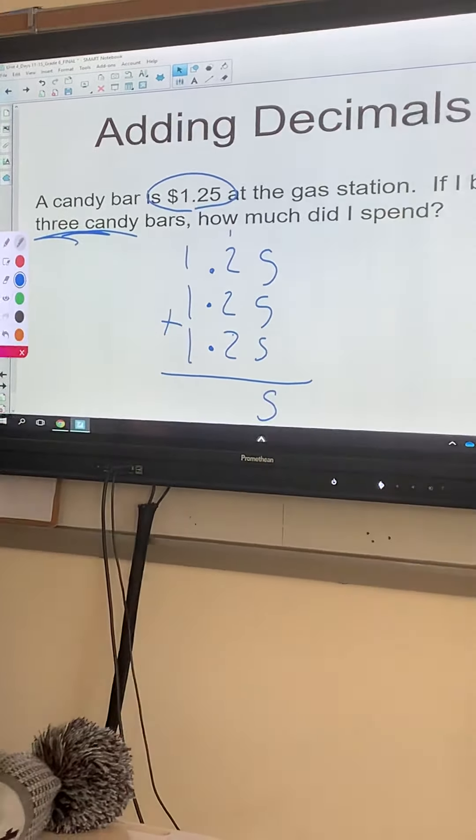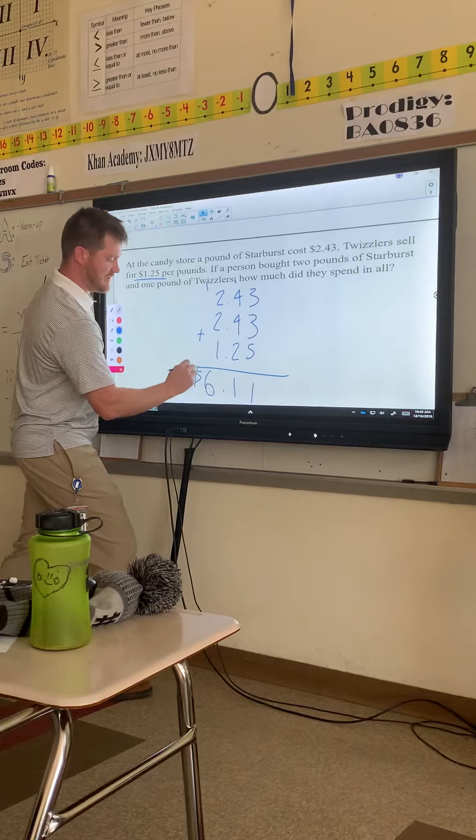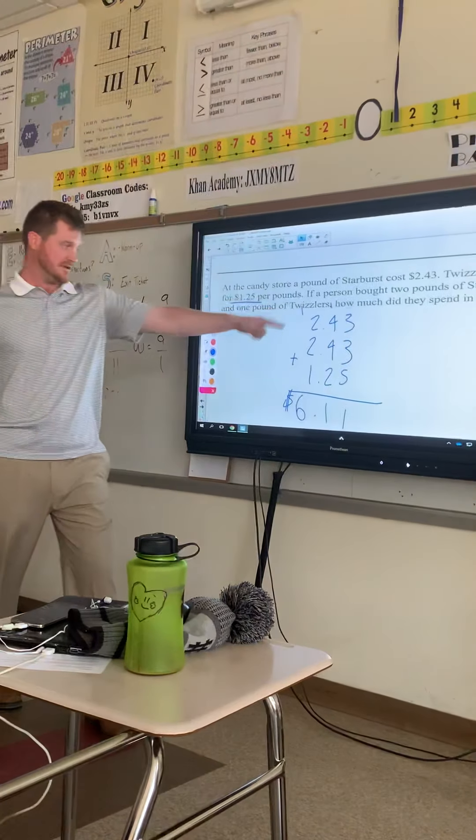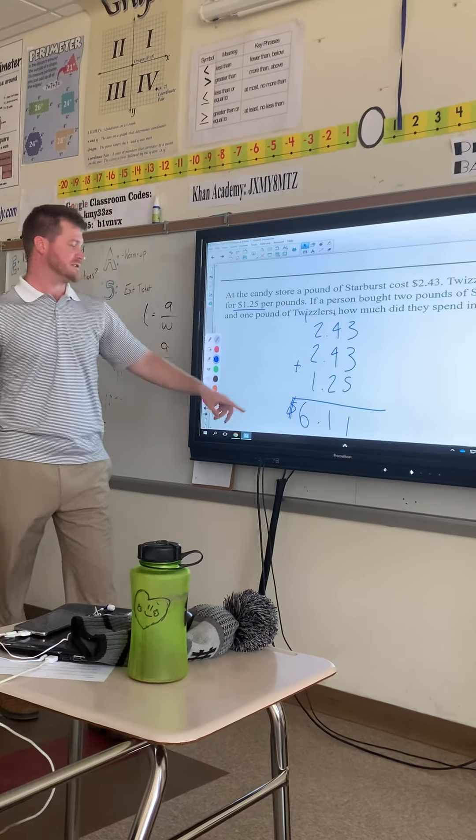Now that we have all the numbers with the same number of digits before and after the decimals, go ahead and add them up. 3 and 3 is 6, plus 5 is 11. 4 plus 4 is 8, plus 2 is 10, plus the 1 I carry is 11. Drop the decimal. 2 plus 2 is 4, plus 1 is 5, plus the 1 at top is 6.